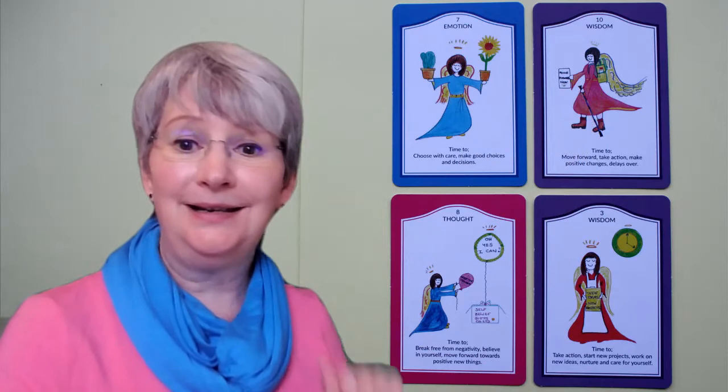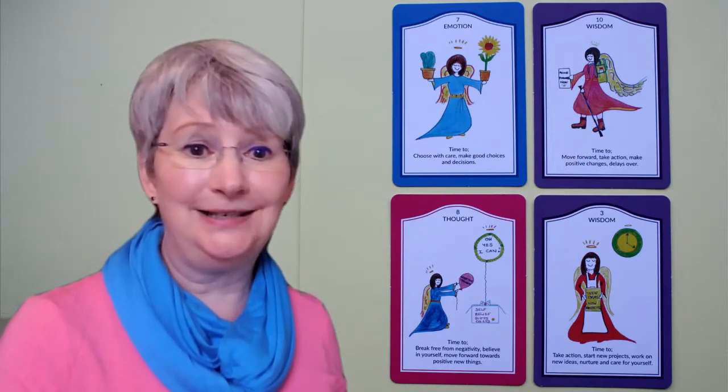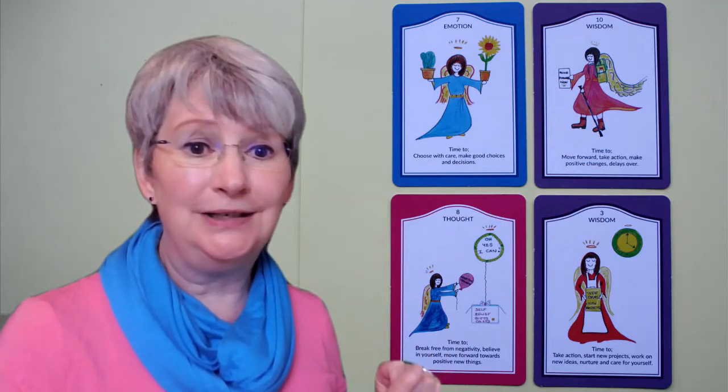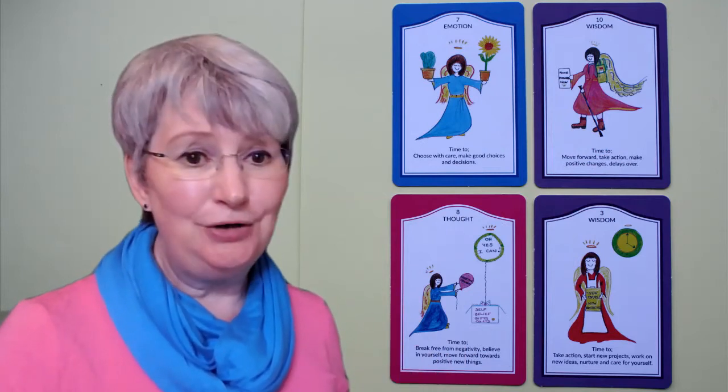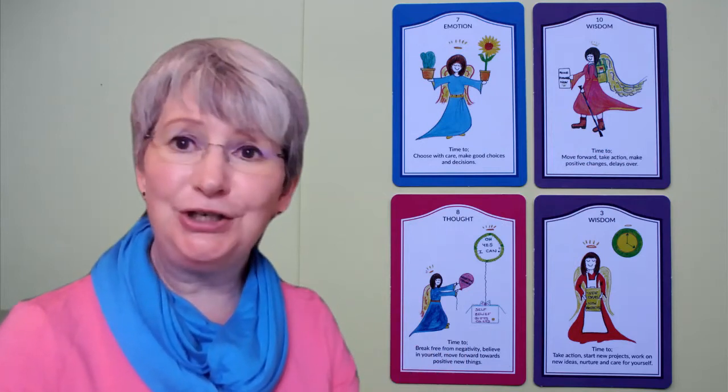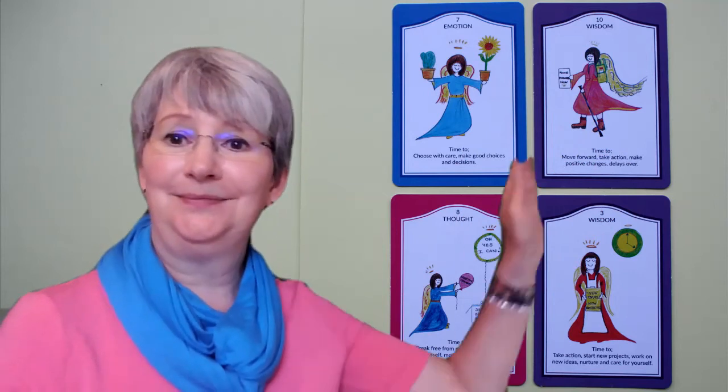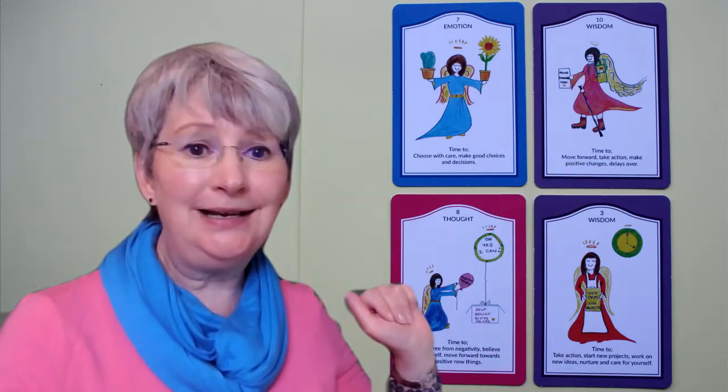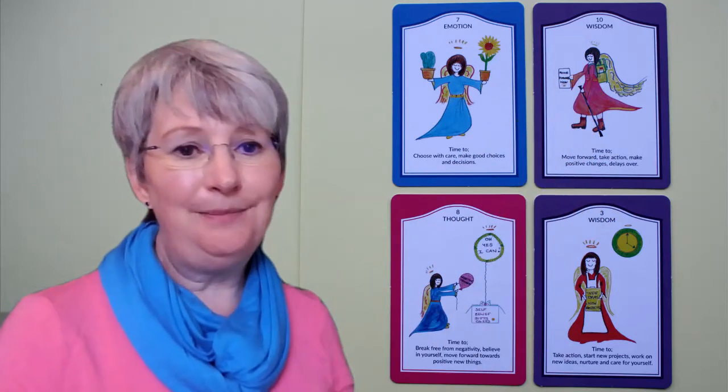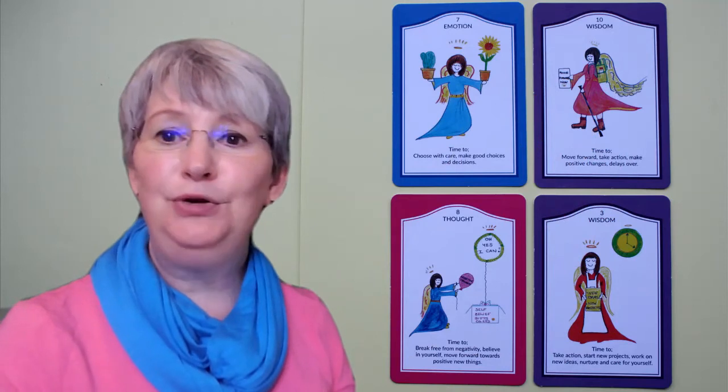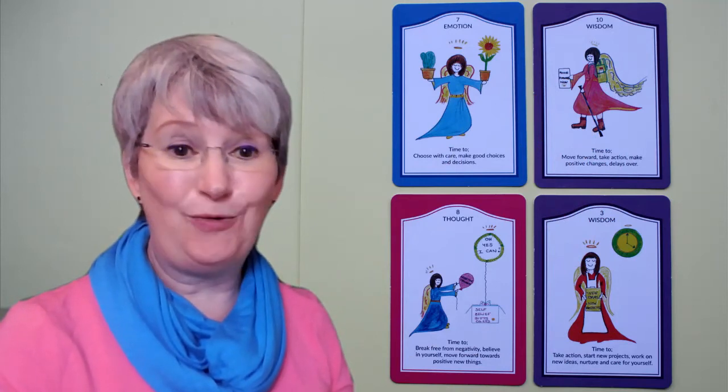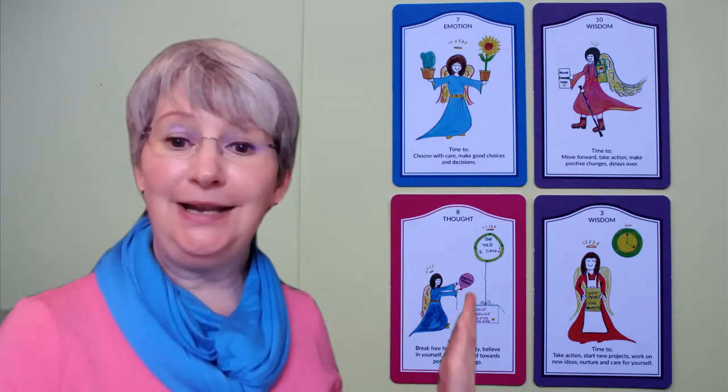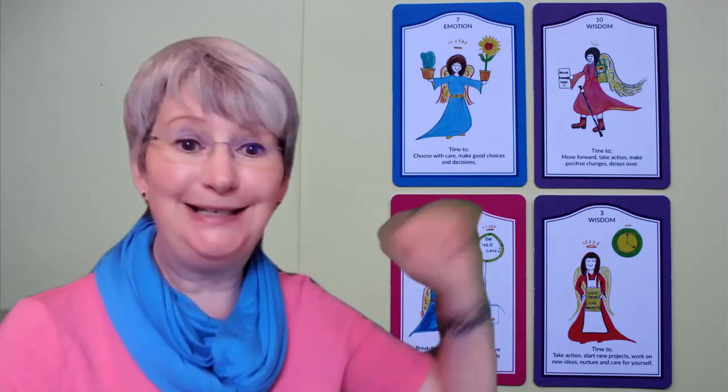Following on beautifully from that, we have the ten of wisdom card. Perfectly fitting in, it's all about moving forward. Suddenly delays are over. It's about taking action and making those positive changes. Our angel here, she's out walking with a rucksack, following a map which says 'move forward now.' And that's exactly what she's doing. She's not letting things hold her back. She's ready to go.